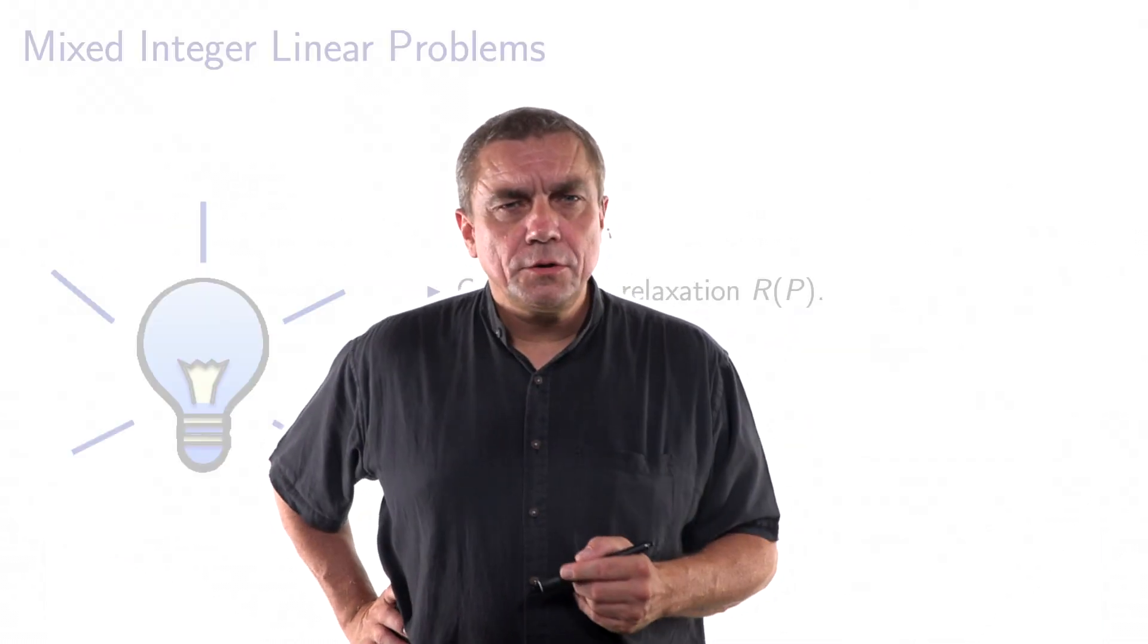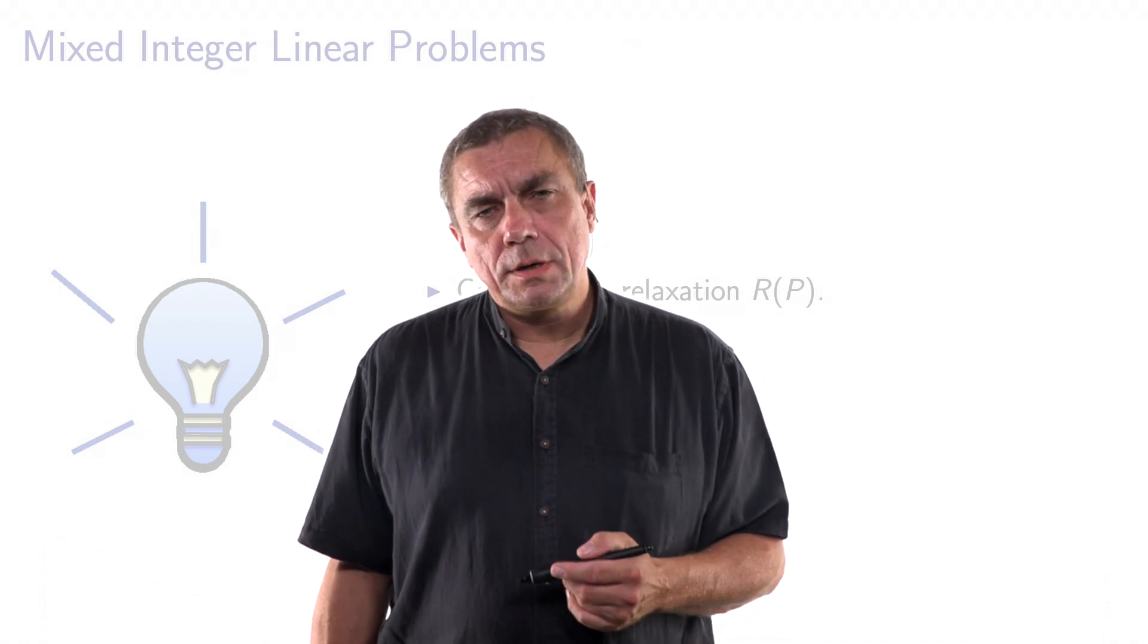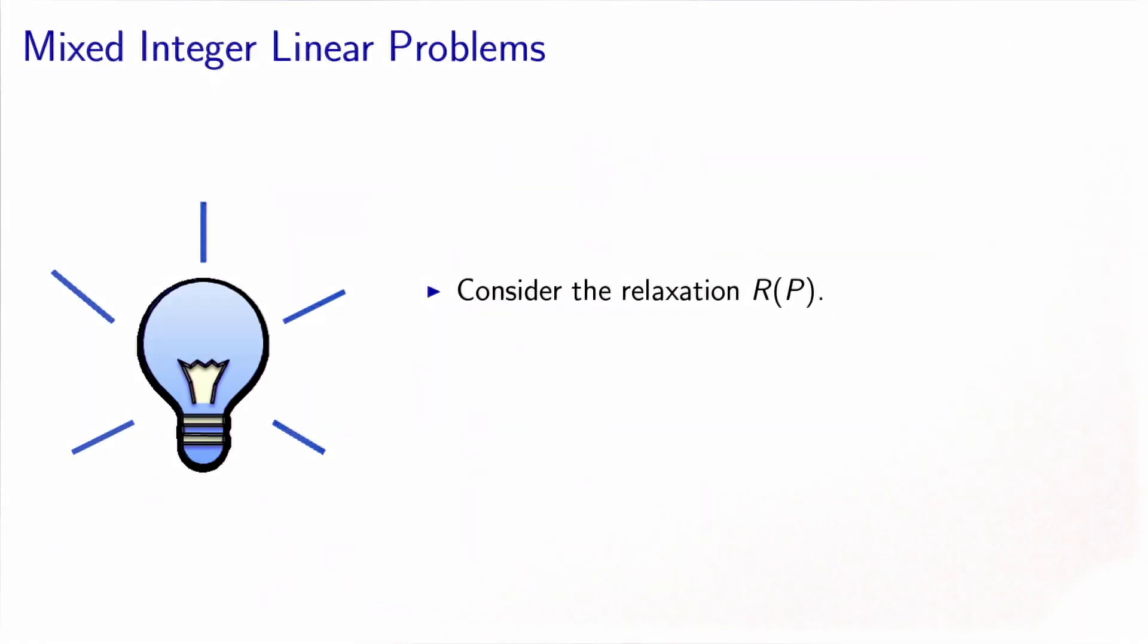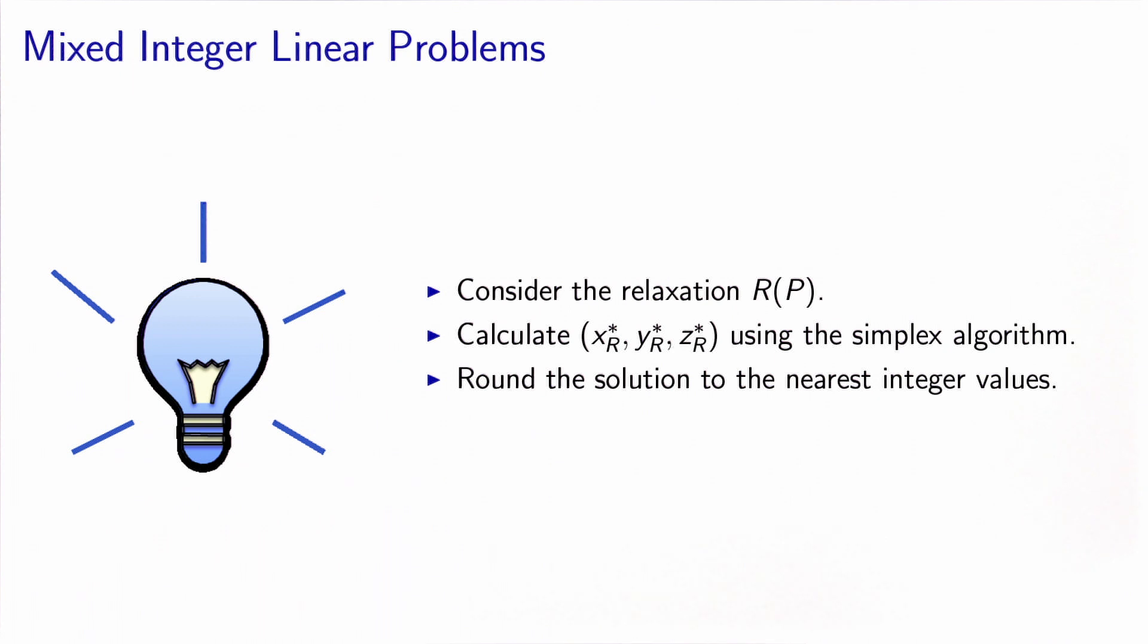This gives me an idea to solve mixed integer linear problems. Let's consider the relaxation problem R(P). This is a linear optimization problem. Therefore, we can calculate the optimal solution using the simplex algorithm. Of course, I have no guarantee in the general case that it will give me an integer solution. But that's okay, I can round the solutions that I have obtained to the nearest integer values.